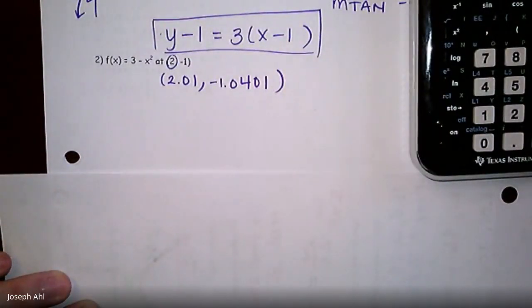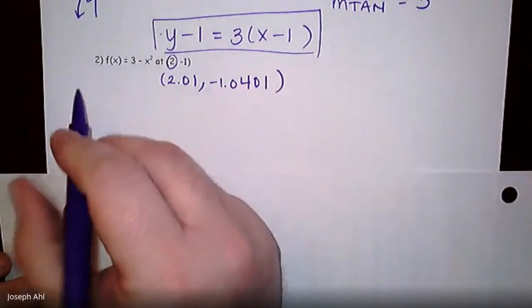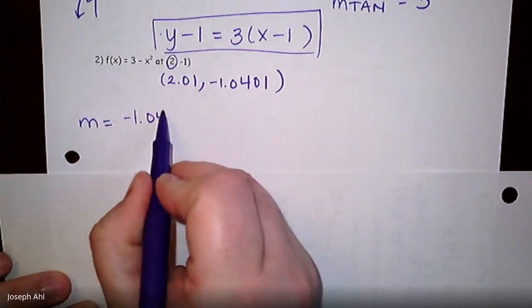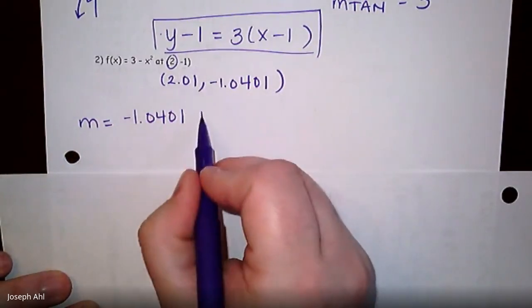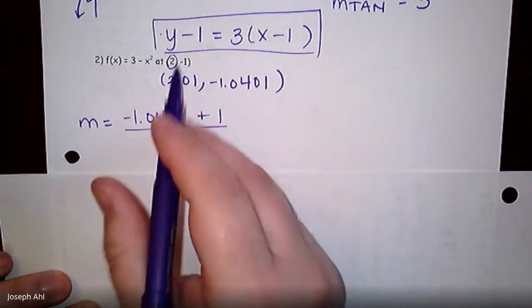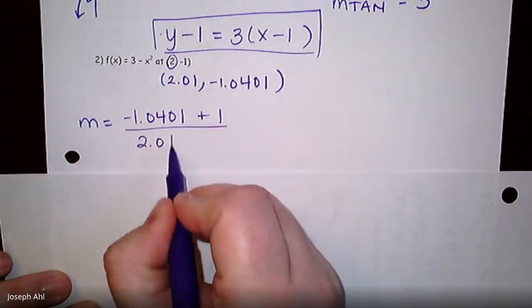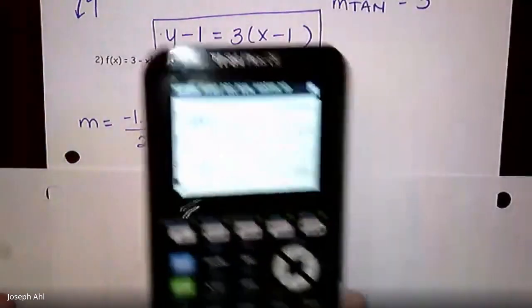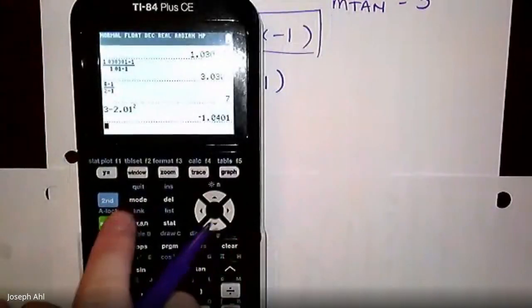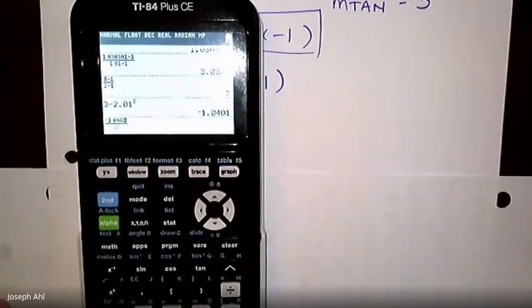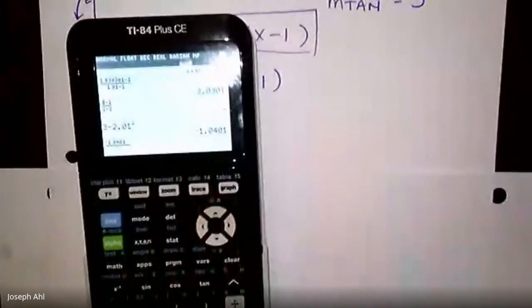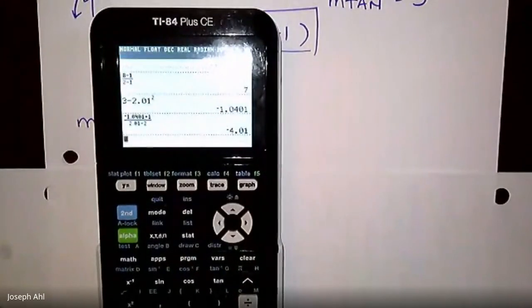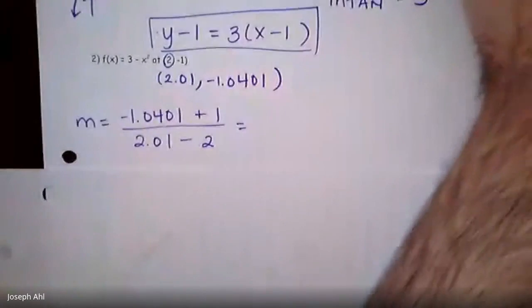Alright, so now that I have my two points, I can calculate the slope. The slope would be change in y. So when I subtract that negative 1, I might as well just make it a plus 1 so I don't confuse myself. The bottom would be 2.01 minus 2. The slope of the secant line in this one is going to be the following. Let's see. Negative 1.0401 plus 1 is the numerator. Bottom is 2.01 minus 2. So I got that the slope is negative 4.01.